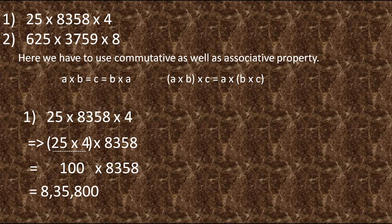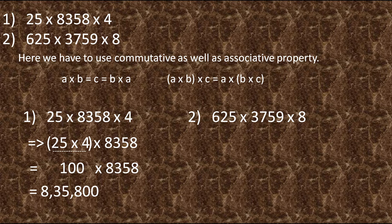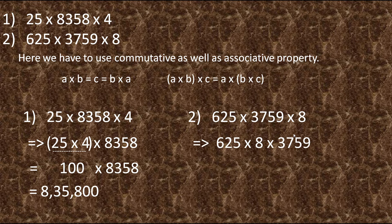Let's take the next equation: 625 into 3759 into 8. Again we have to find the combination giving a multiple of 10. When a number with 5 at the unit place is multiplied by an even number, the answer is a multiple of 10. Here 625 has 5 at the unit place and 8 is even. We interchange their places using commutative property to get 625 into 8 into 3759, then group them using associative property.